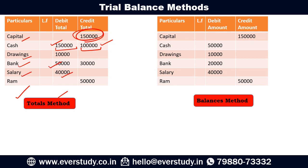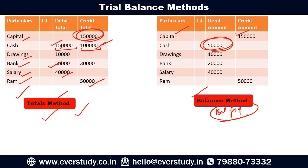Now moving towards the balance method — the difference from the total method is as follows. For the capital amount, the credit amount of 1,50,000 is shown as it is. But notice here — for the cash account, the debit was 1,50,000 and credit was 1,00,000. In the balance method, what amount is shown? It shows the net balance: 1,50,000 minus 1,00,000 equals 50,000, which we show in the debit column. This is the specific difference between the total method and the balance method — in total, you show the full amounts; in balance, we show only the balancing figures.